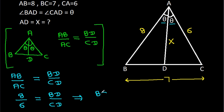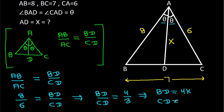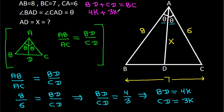So BD by CD will be equal to 4 by 3. That means if BD is 4k, then CD will be 3k. BD plus CD equals BC, so 4k plus 3k equals 7, giving 7k equals 7, which means k equals 1.